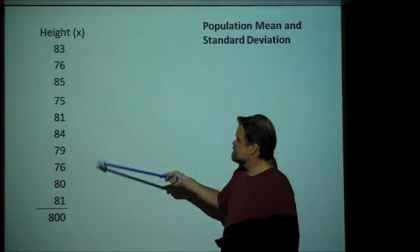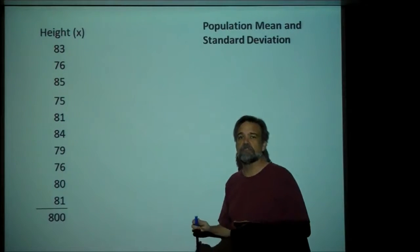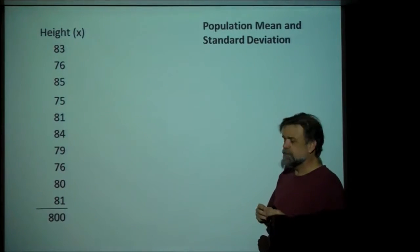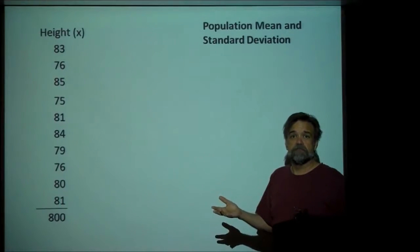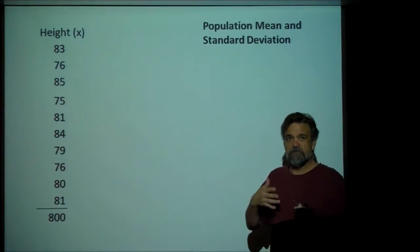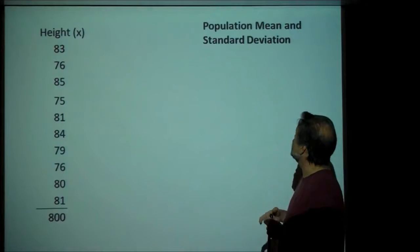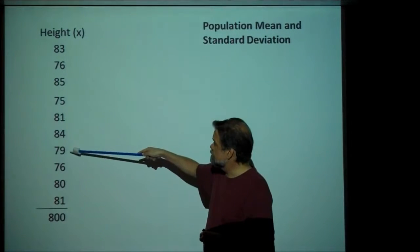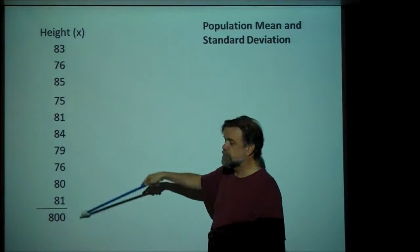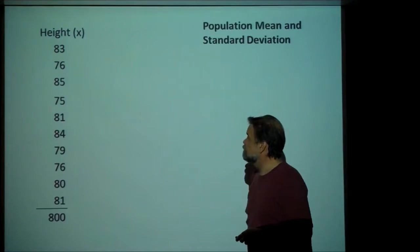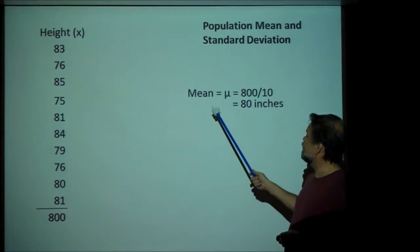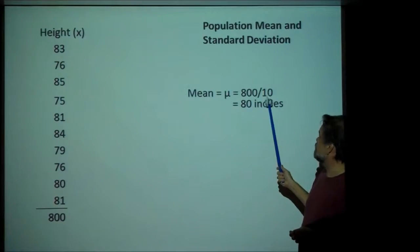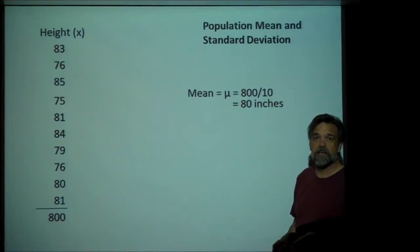What we have here are the heights of 10 basketball players. The first thing I want to do is calculate the mean. We've all averaged numbers before — you just add up these numbers and then divide by the number of numbers that you have. So, the mean is 800, our sum, divided by 10, which gives us 80 inches.